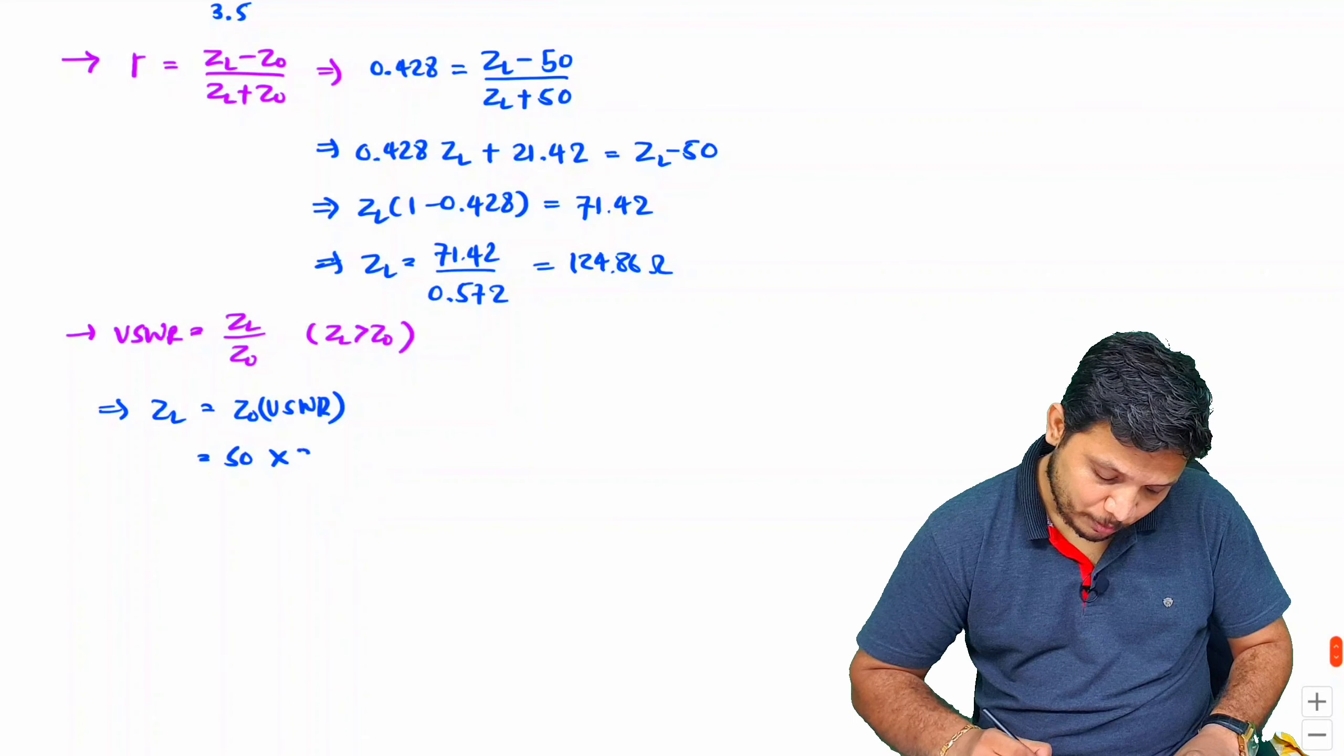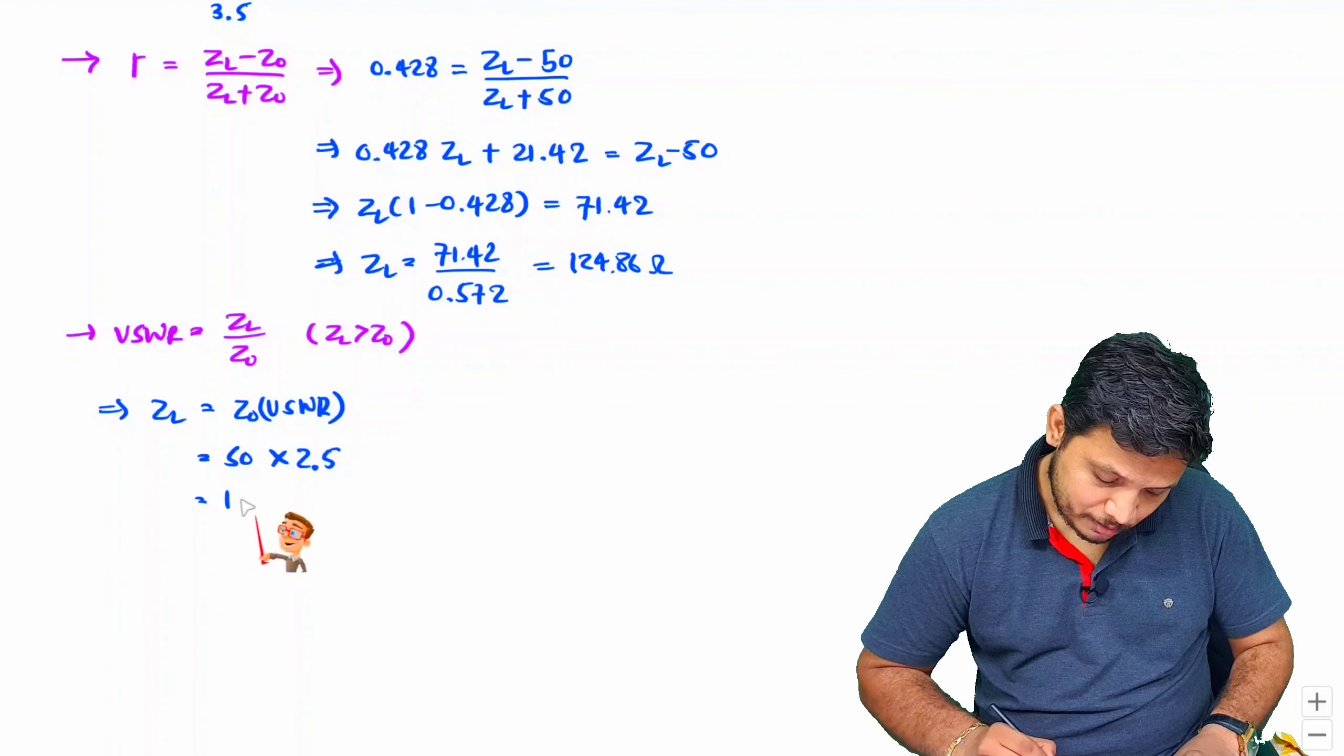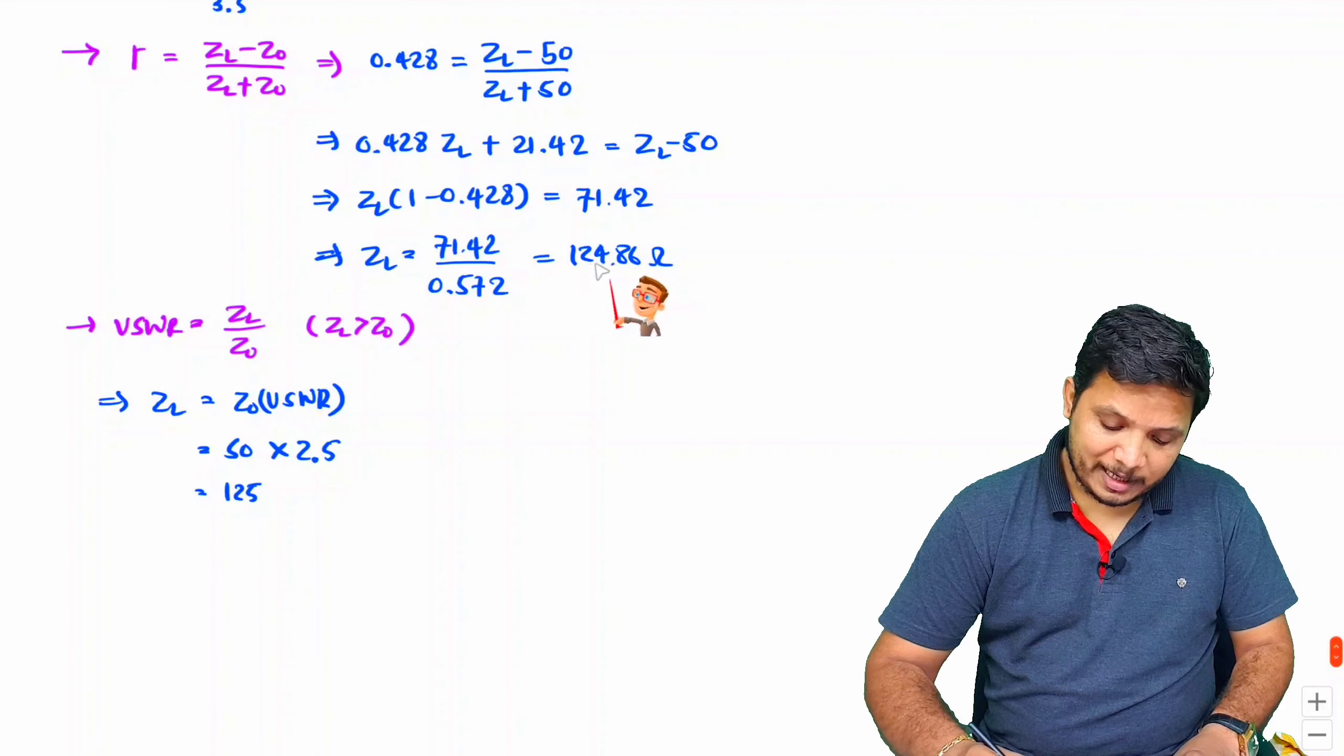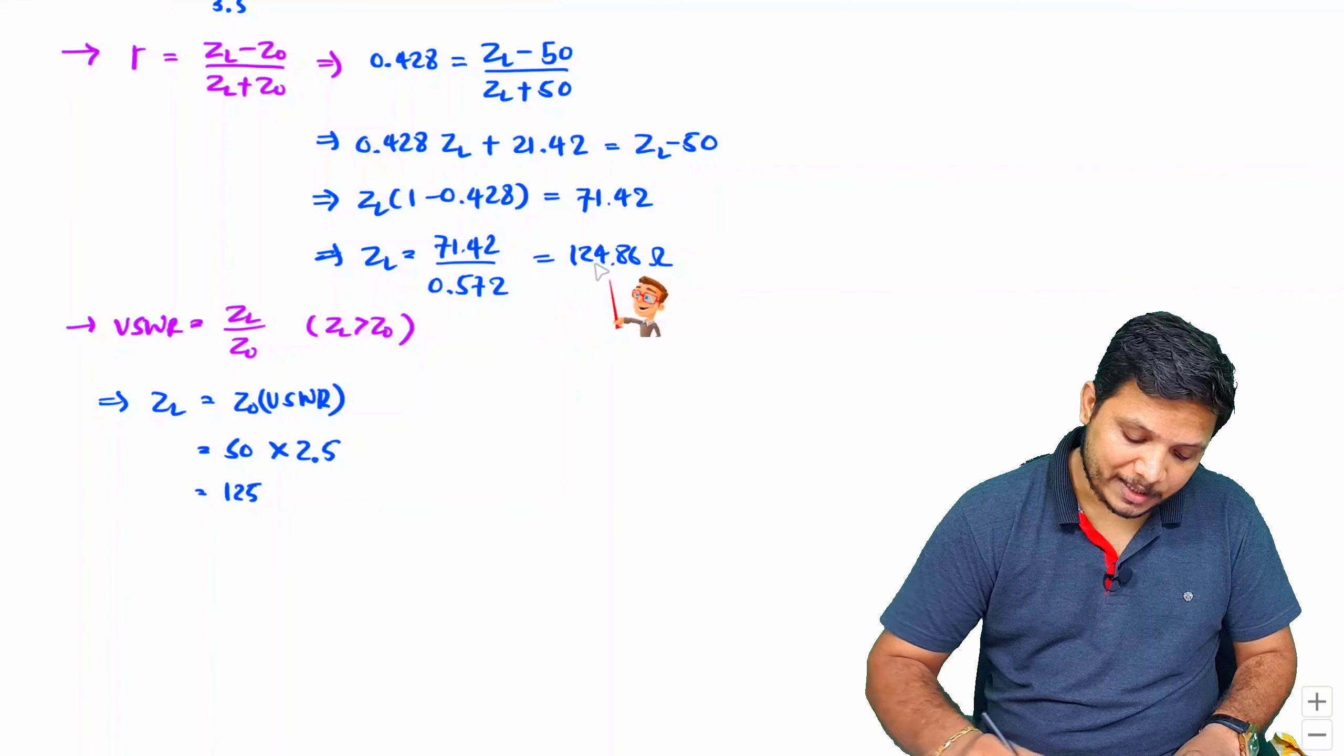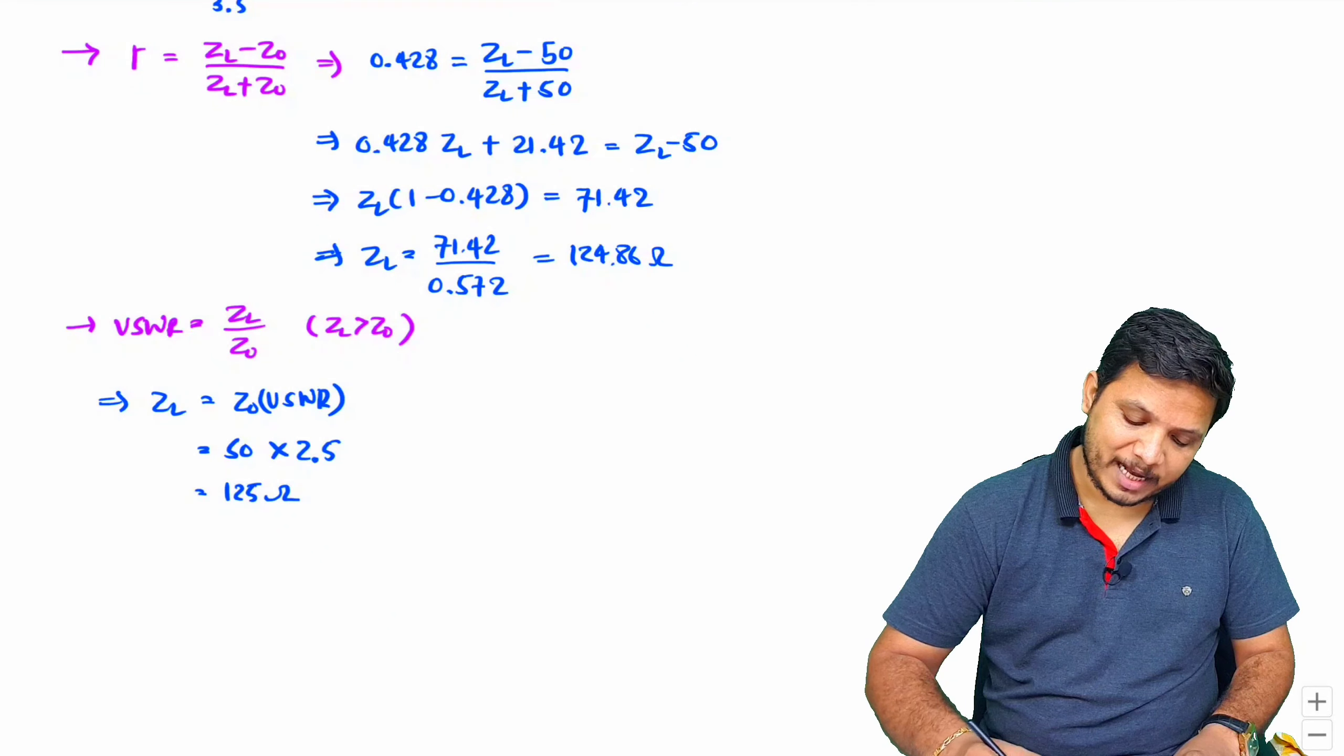Z0 is 50 and VSWR that we calculated is 2.5, so 50 into 2.5 will make it 125. So approximately the answers are the same here. Our answers calculated in terms of fractions have somewhat difference, but both are the same.